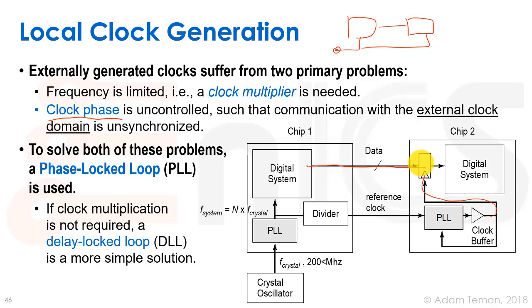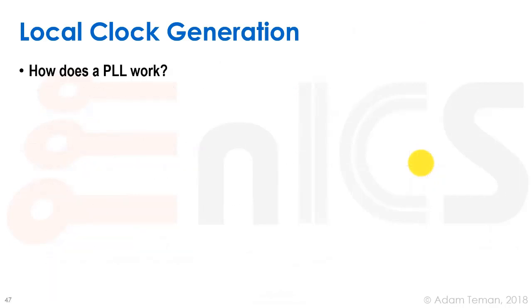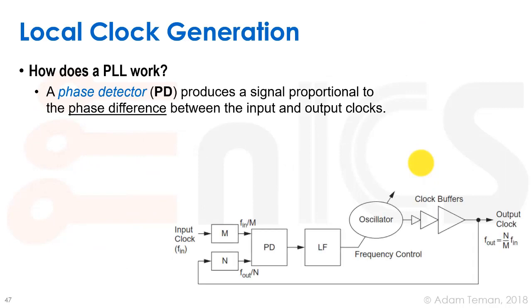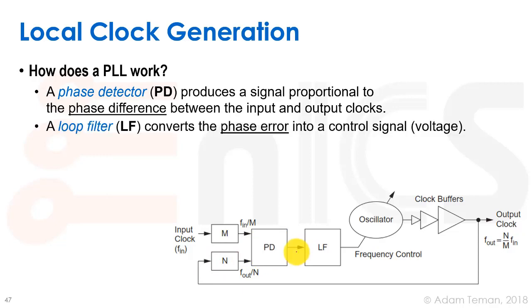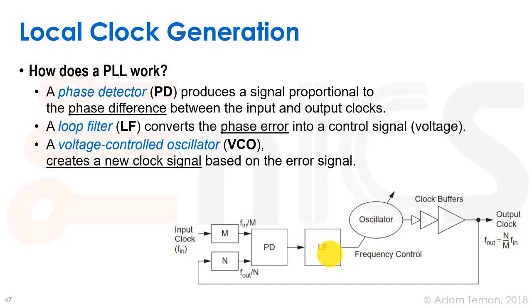How does the PLL work? This is a schematic description of the PLL. We get some sort of input clock, we may divide it, and we have a return path from our output clock. We detect the phase difference between them with a phase detector. This phase detector is driven into a loop filter which converts the phase error into a control signal or voltage. The voltage is driven into a voltage-controlled oscillator or VCO.